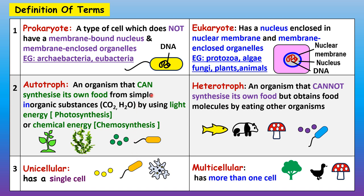An autotroph is an organism that can synthesize its own food from simple inorganic substances using light energy — as in plants that carry out photosynthesis — or using chemical energy through chemosynthesis, which occurs in some types of bacteria. Heterotrophs are organisms that cannot synthesize their own food but obtain nutrients by eating other organisms, such as animals, fungi, and some bacteria.